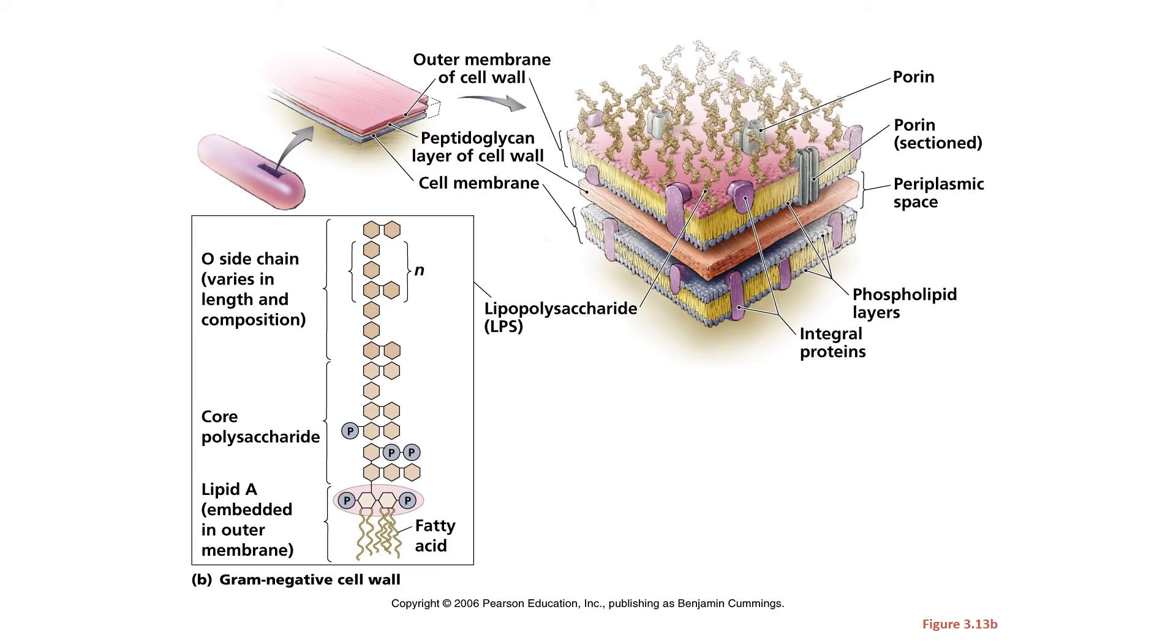The outer membrane in gram-negative bacteria is made of lipopolysaccharide or LPS. Underneath the outer membrane is a thin layer of peptidoglycan, and then underneath that is the cell membrane.